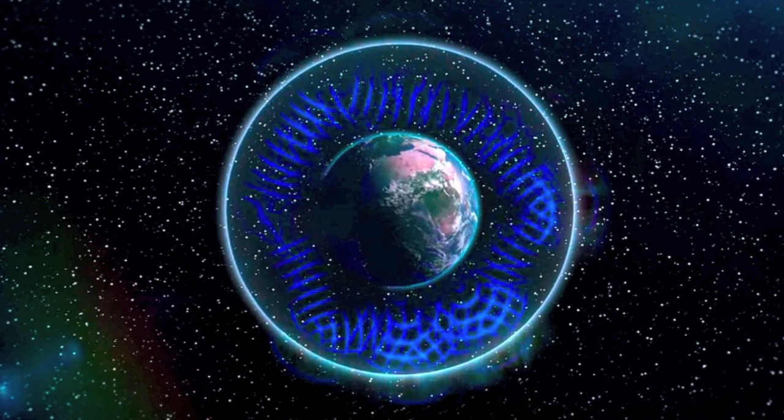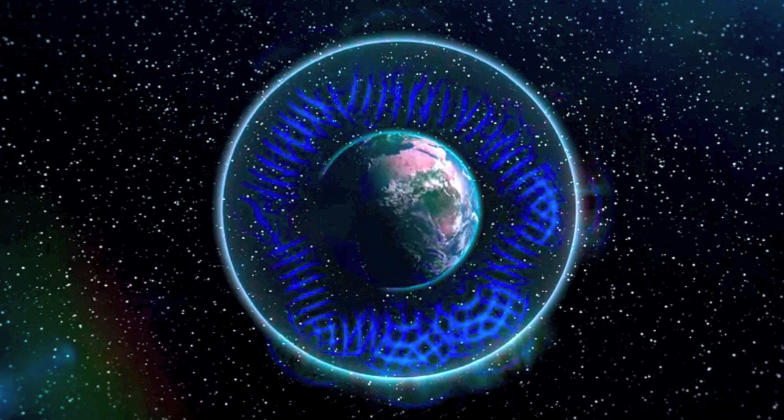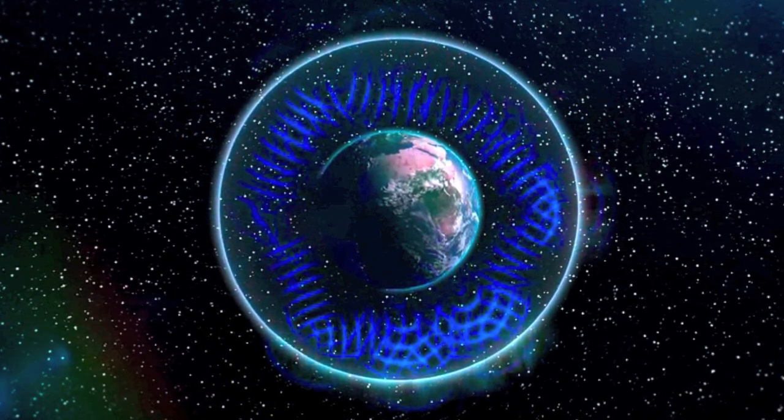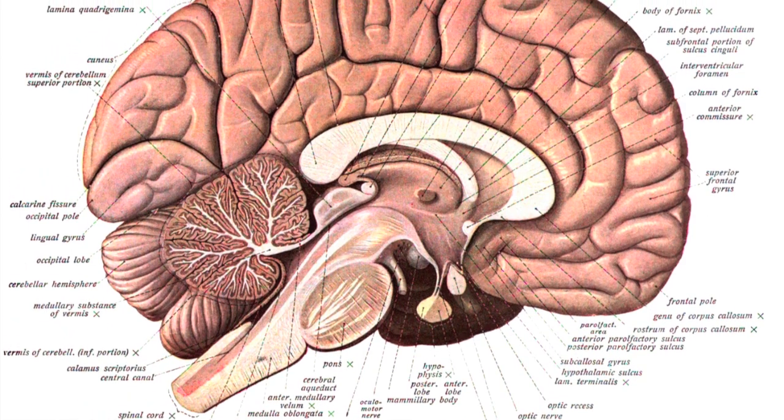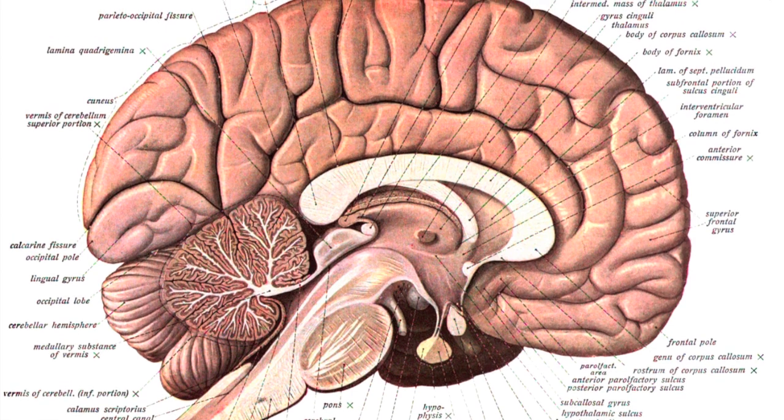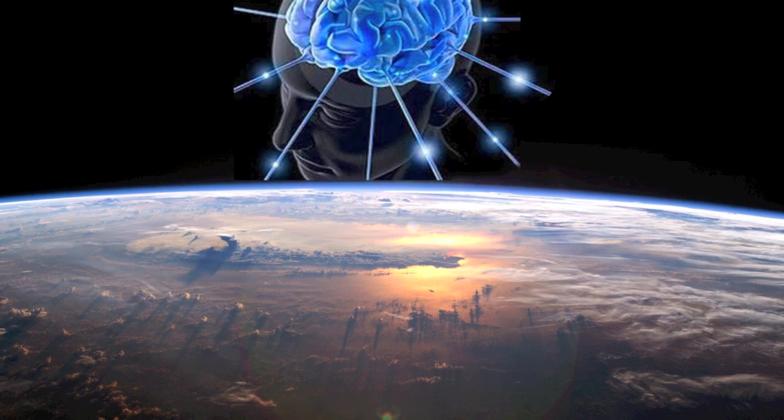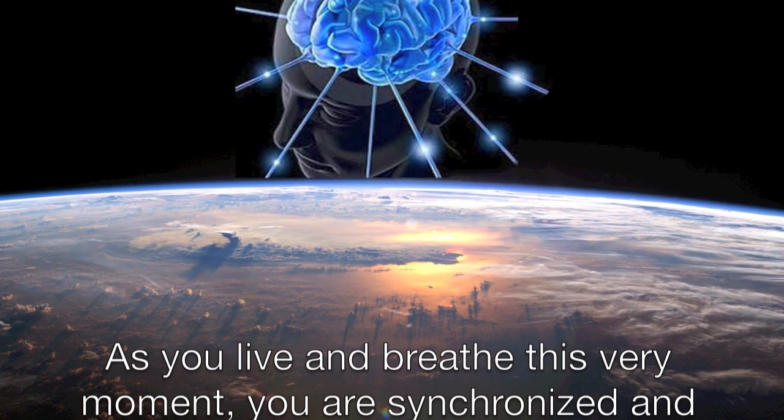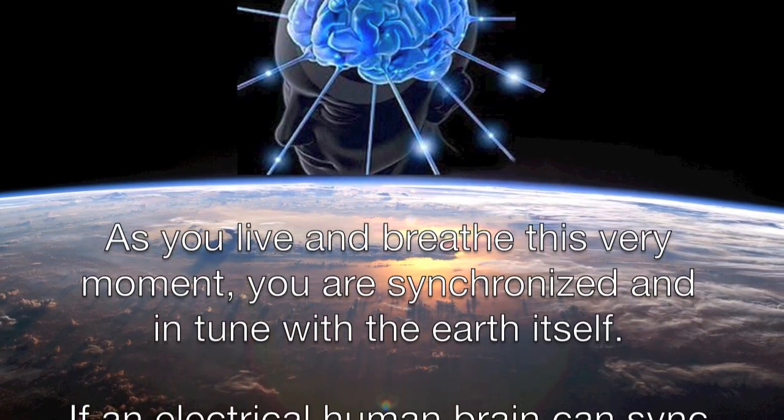This measurable frequency that surrounds all life on Earth is now universally known as the Schumann resonance of 7.83 Hertz. Did you know that the alpha waves of the human brain closely match that same electromagnetic Earth frequency? Wow, do you think this is by accident?